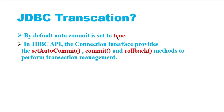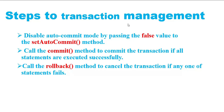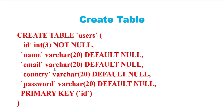By default, auto-commit is set to true, so we need to explicitly set it to false by calling the setAutoCommit method. The Connection interface in the JDBC API provides the setAutoCommit, commit, and rollback methods for transaction management. The steps are: first, disable auto-commit mode by passing false to setAutoCommit; then call commit if all statements execute successfully; or call rollback to cancel the entire transaction if any statement fails.